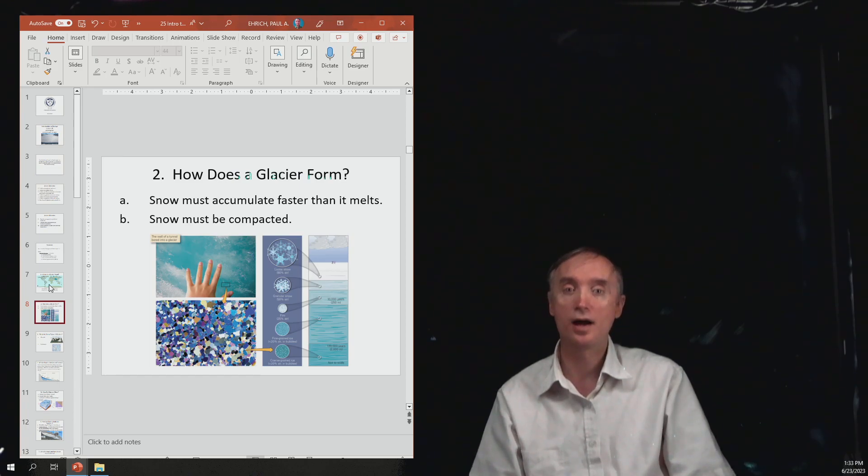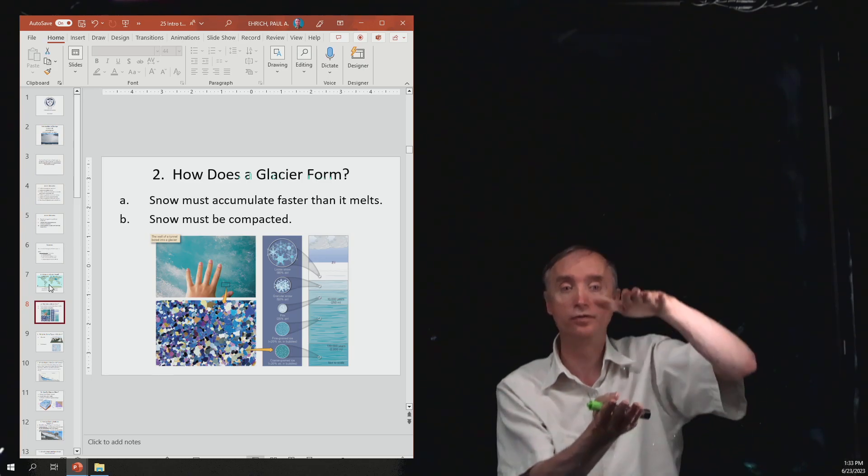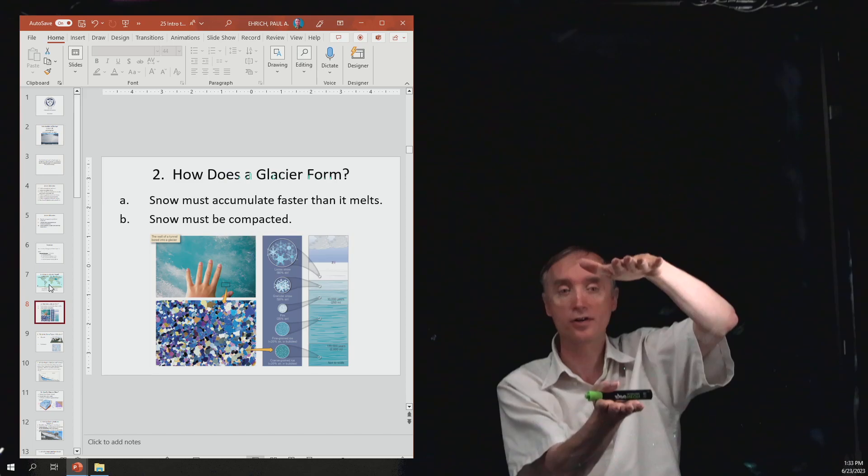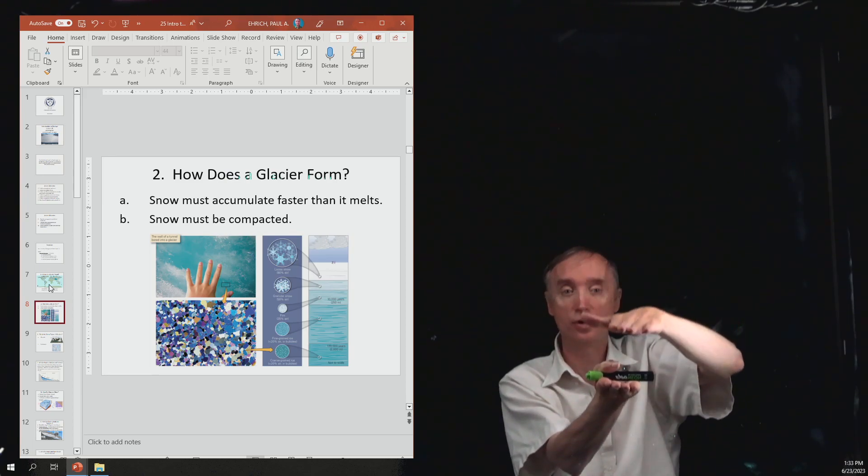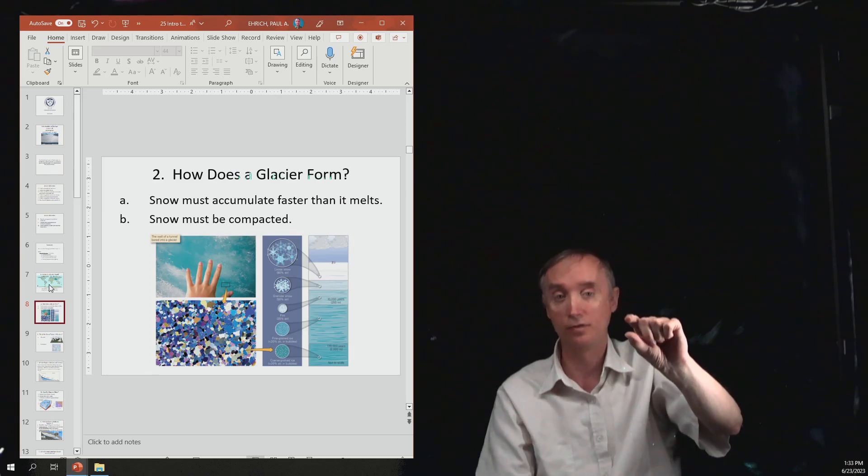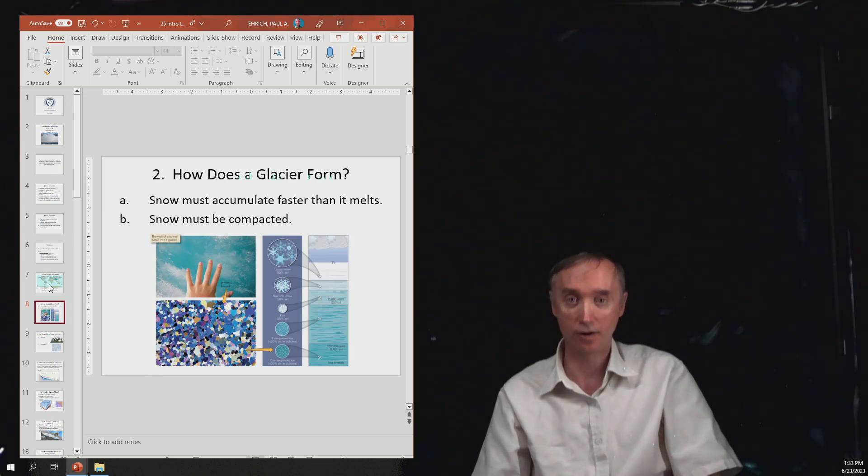So how does a glacier form? It's going to form as a result of the compaction of snow. Snow when it first falls is mostly air, because if you take one foot of freshly fallen snow and melt it, it turns into about one inch of water. So that snow is mostly air.